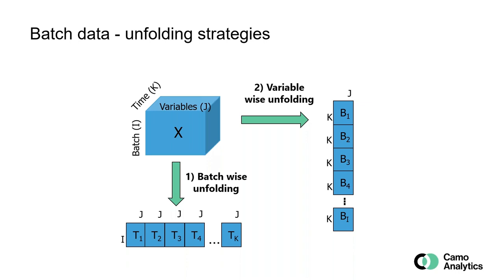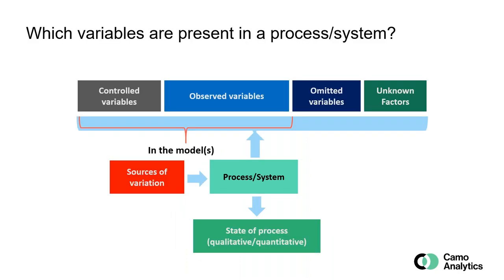The other option is to unfold so that we have J variables as columns, and we have as many rows as we have batches and points of time or samples. And it's important before we start to perform any modeling that we are aware of what kind of variables we have in the process. Typically we have some that are controlled — for example, temperature controlled to 37 degrees — and then we also observe temperature, which could be 37.3. We can also observe other variables that for the batch case are reflecting the change, like in chemistry or biology. And then there are some variables that we didn't measure, some sensors we didn't put in our system, and some things that we don't know.